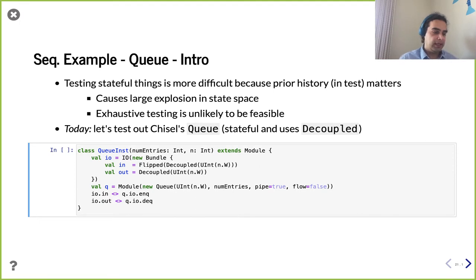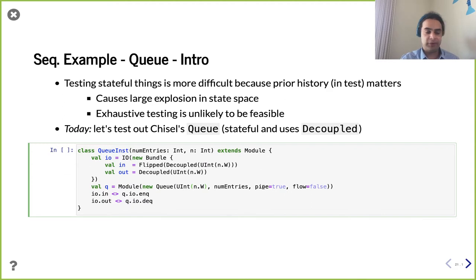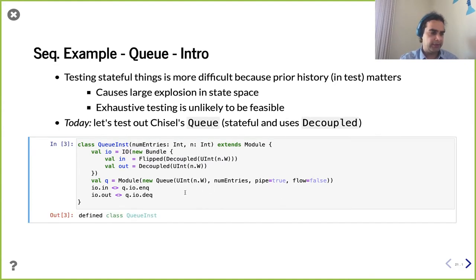If we're trying to test a queue instance, we'll take a number of entries and a bit width and set up our input. Remember for decoupled, we use a flip to get the input direction; otherwise decoupled defaults to the output direction. We instantiate the module from Chisel util and fill it in with parameters that allow us to enqueue and dequeue at the same time in a given cycle, and everything has to go through at least one register.